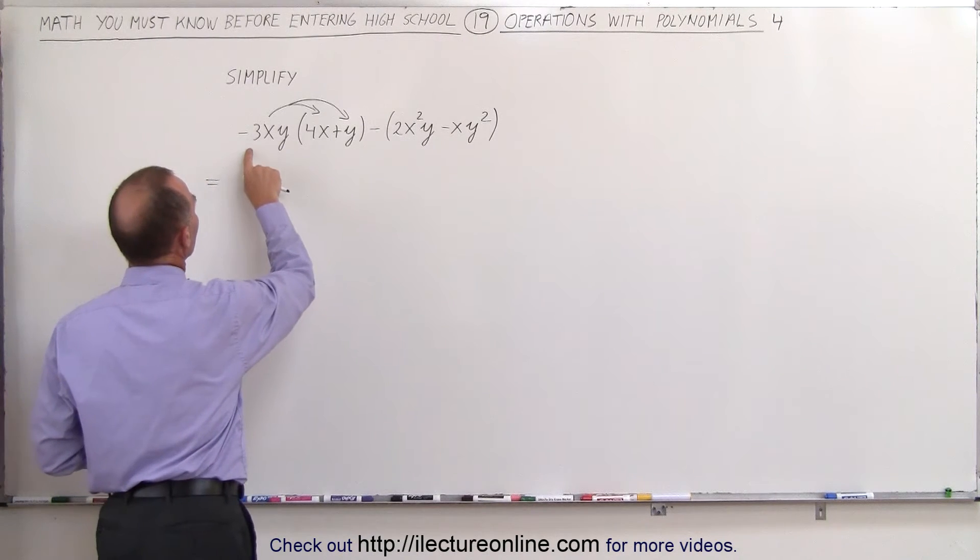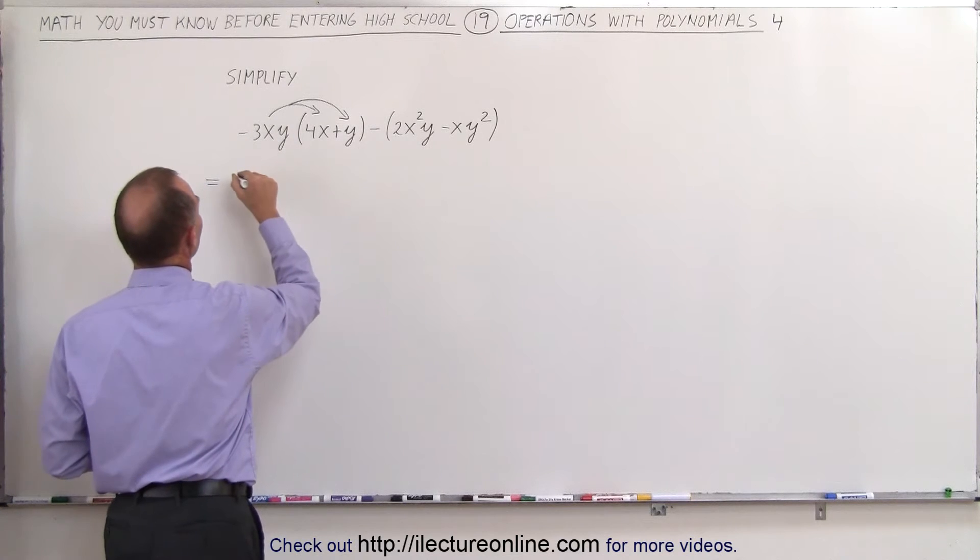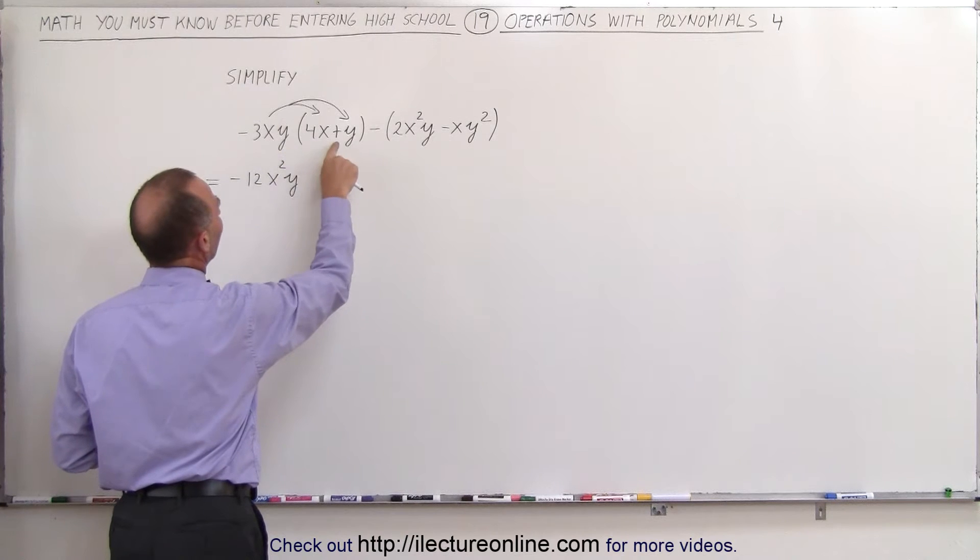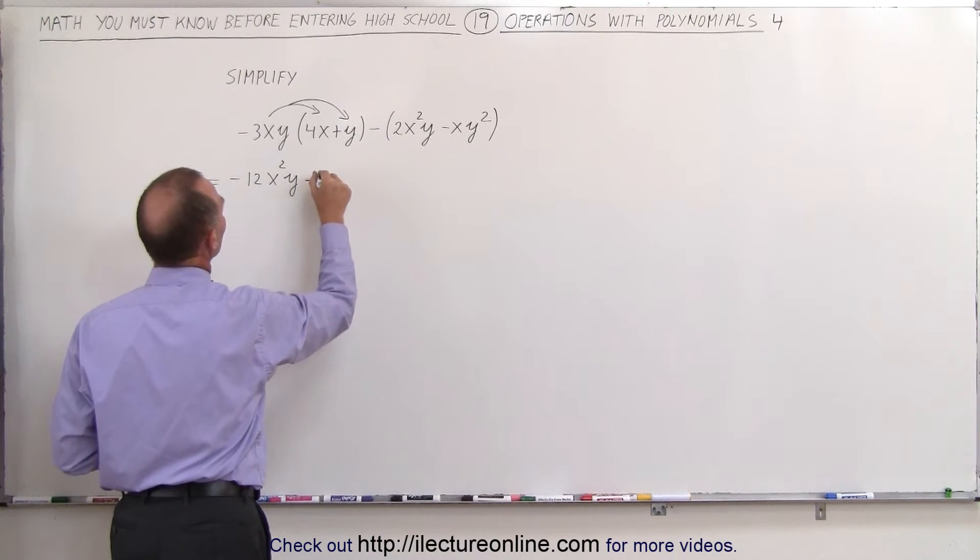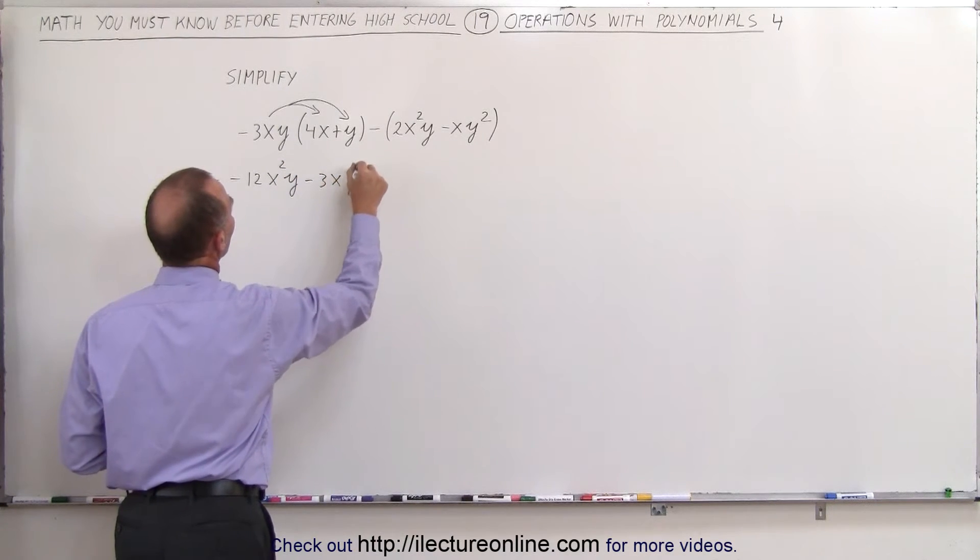So this becomes minus 3xy times 4x is minus 12x squared y. And minus 3xy times y is minus 3xy squared.